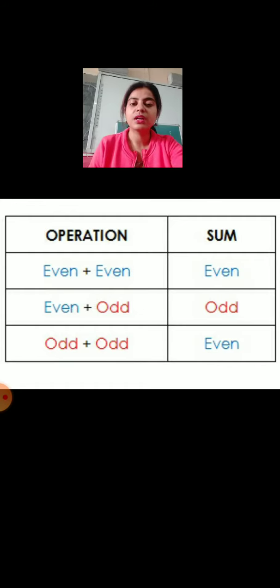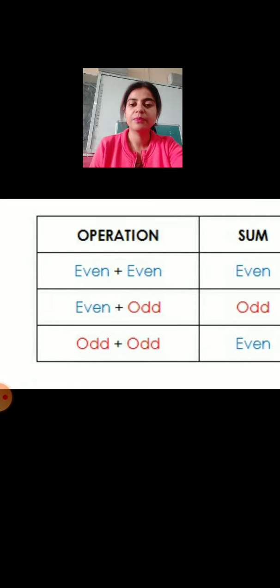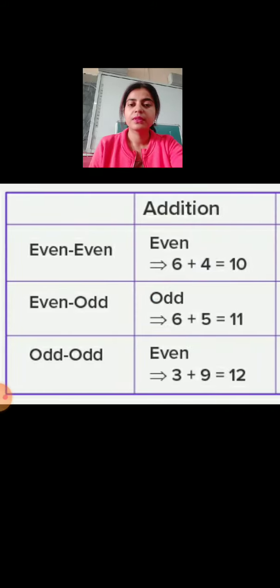Students, now I am going to explain this to you with the help of an example. The same operation children, even, even. We have two even numbers here, 6 plus 4. Two even numbers when they are added, the result is 10 which is an even number.